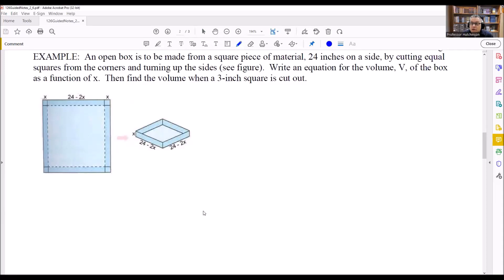In this problem, we want to construct an open box that's made from a square piece of material 24 inches on the side by cutting the squares from the corners and then turning up the sides.